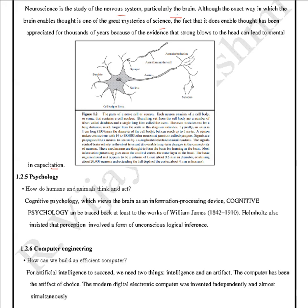Next comes psychology — how do humans and animals think and act? Cognitive psychology views the brain as an information processing device. It can be traced back to the works of William James, and Helmholtz also insisted that perception involved a form of unconscious logical inference. An agent first perceives things in the environment, then learns and takes certain actions — through psychology and training, it takes decisions.